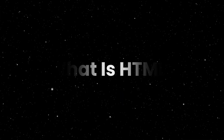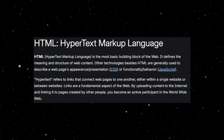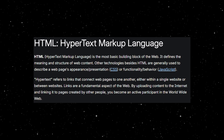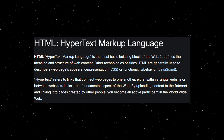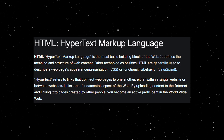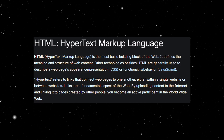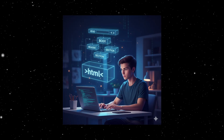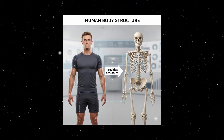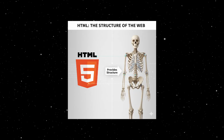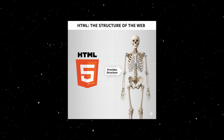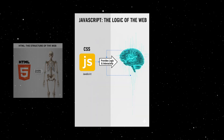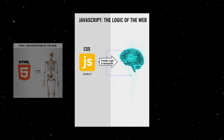What is HTML? So, what exactly is HTML? HTML isn't a programming language — it's a markup language. That means it doesn't run logic like math or conditions. Instead, it describes the structure of your content so browsers know how to display it. Think of HTML as the skeleton of a website. Just like a skeleton gives your body structure, HTML gives structure to your text, images, links, and forms. Then CSS is like the clothing and design, and JavaScript is like the brain that adds interactivity.